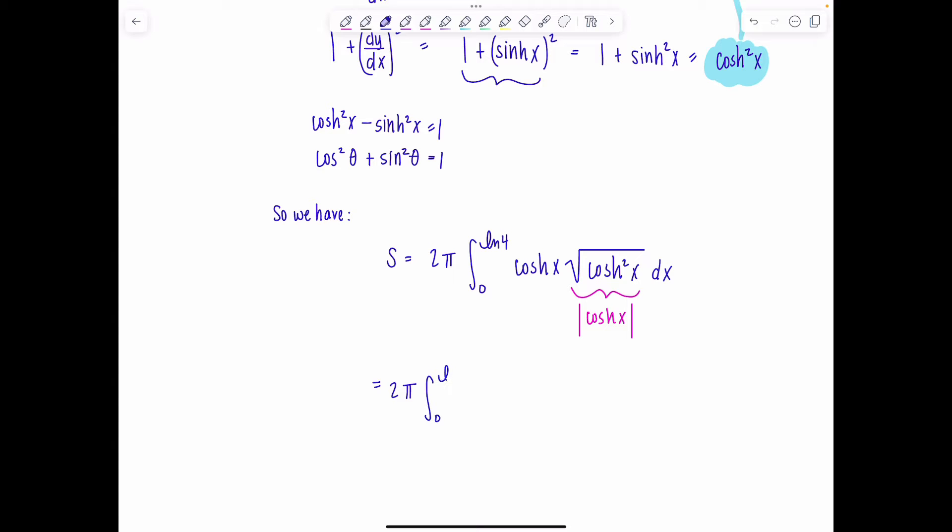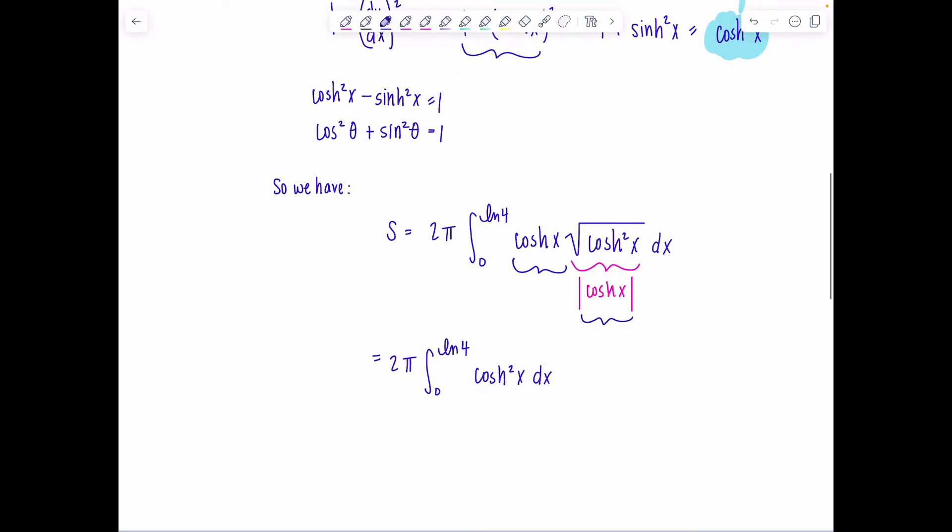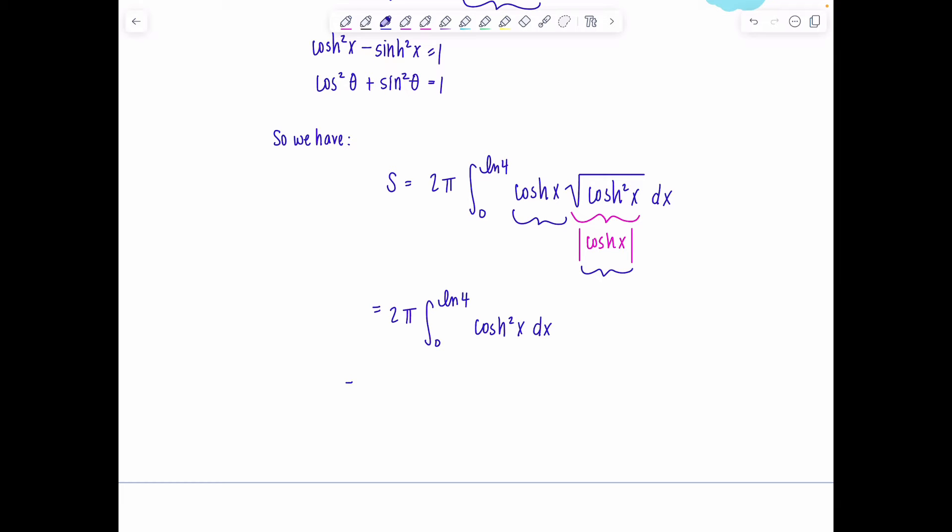Back to the problem at hand. We can rest at ease. We don't need the absolute value. And now I have 2π integral 0 natural log of 4. Here's one hyperbolic cosine. Here's one more hyperbolic cosine. So I have cosh squared x dx. Now, how do you integrate cosh squared x? Very similar to how we integrate cosine squared x. We replace it with our half angle identity. And, lucky for us, the identity is identical. So we have 2π 0 to natural log of 4. I'm going to replace cosh squared x with one half times 1 plus cosh 2x dx.